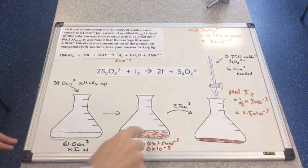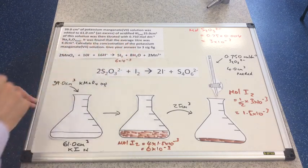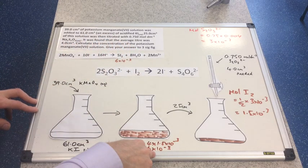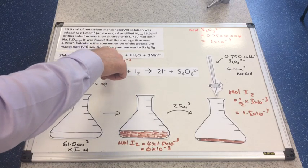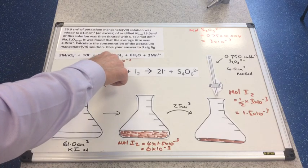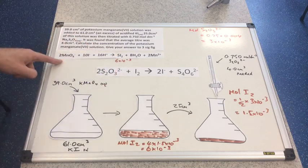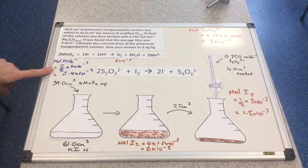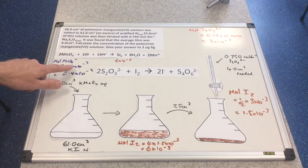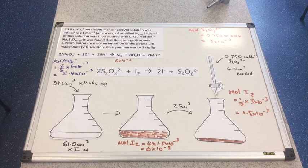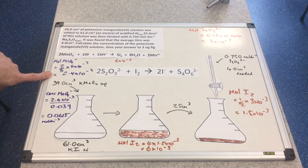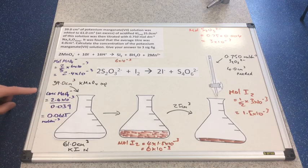This iodine was produced by the first reaction. You can see I've written 6 × 10⁻³ mol underneath the five I2 molecules in that first equation. The moles of MnO4⁻ ions are two-fifths of that — from the mole ratio. So moles of MnO4⁻ = (2/5) × 6 × 10⁻³ = 2.4 × 10⁻³ mol. These 2.4 × 10⁻³ mol of MnO4⁻ must have been present in the original 39 cm³ of KMnO4 solution.